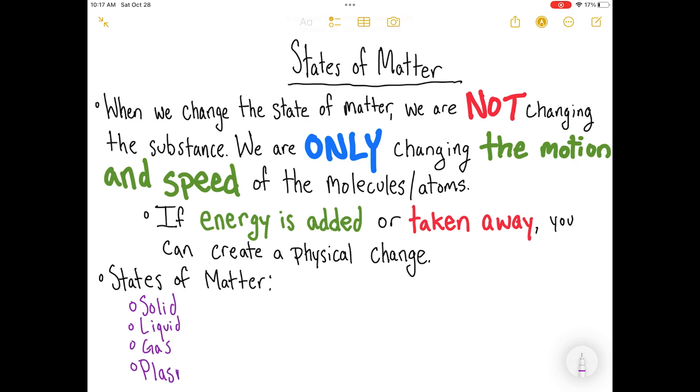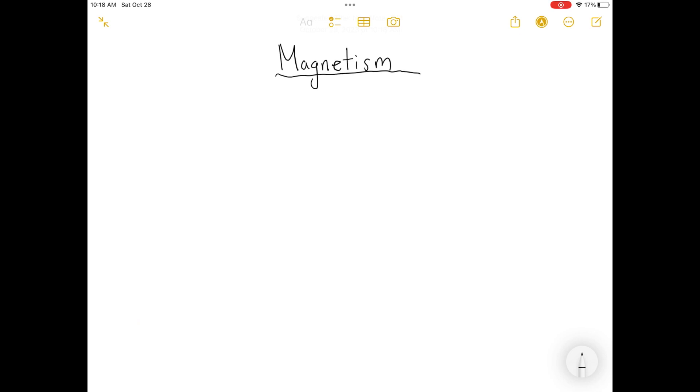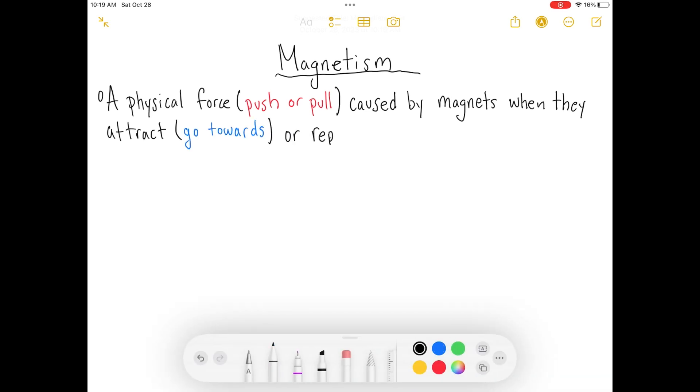Magnetism is another physical property. Basically, it's a push or a pull, a force, caused by magnets. And this happens with the electrical charges that are within the atoms. Now, that whole topic is a whole other video on its own, so we're not going to dive deep into that concept of the electrical forces within the atoms.